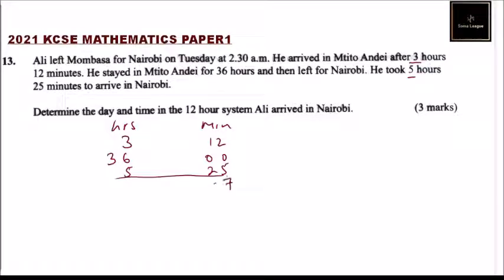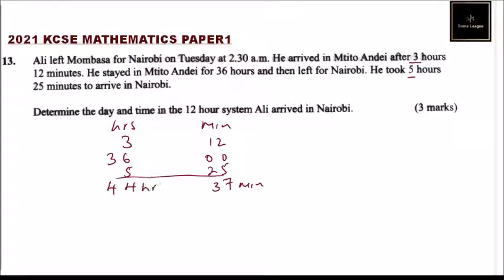Adding up the minutes: 12 + 00 + 25 = 37 minutes. Adding up the hours: 3 + 36 + 5 = 44 hours, plus 1 carried over, giving us a total travel time of 44 hours 37 minutes.